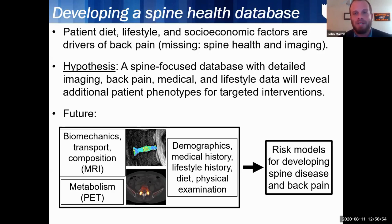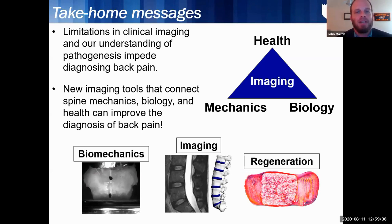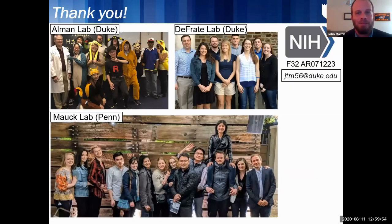Missing from the OA database was detailed information about spine health and spine imaging features. I hypothesize that a spine-focused database with detailed imaging, back pain, medical, and lifestyle data can reveal additional patient phenotypes that can be targeted with specific back pain interventions for personalized medicine — a study design being made popular in the NIH BackPAIN program. In the future, early predictors of disease like fluid transport and glucose uptake, in addition to biomechanics, composition, and patient factors, would benefit a longitudinal study for tracking spine health. My two take-home messages: first, limitations in clinical imaging and our understanding of pathogenesis impede diagnosing back pain; and second, new imaging tools that connect spine mechanics, biology, and health can improve the diagnosis of back pain. Thank you so much.